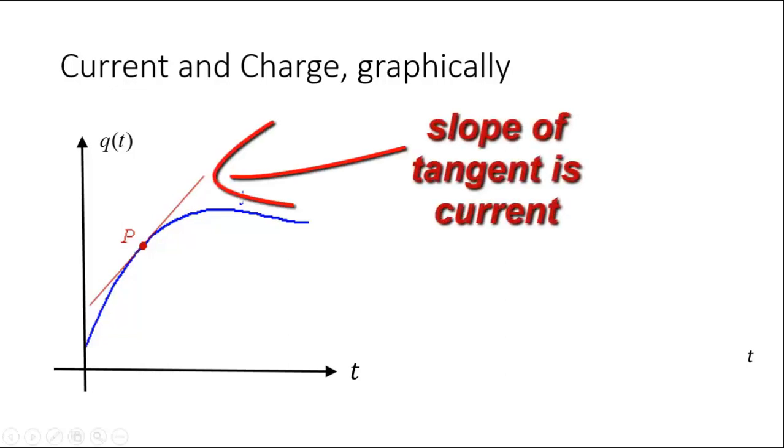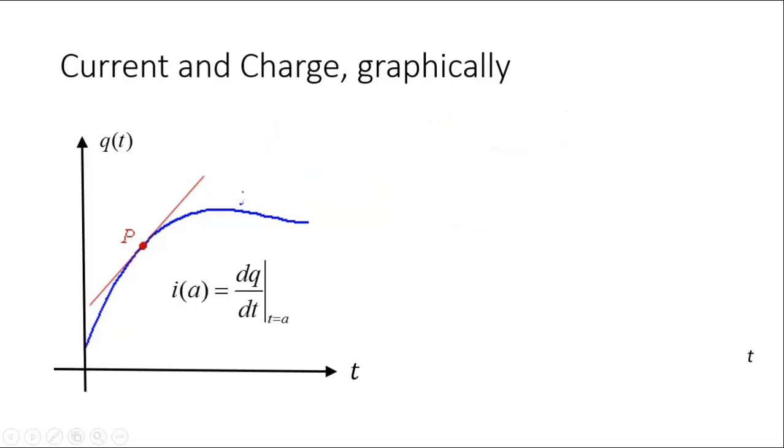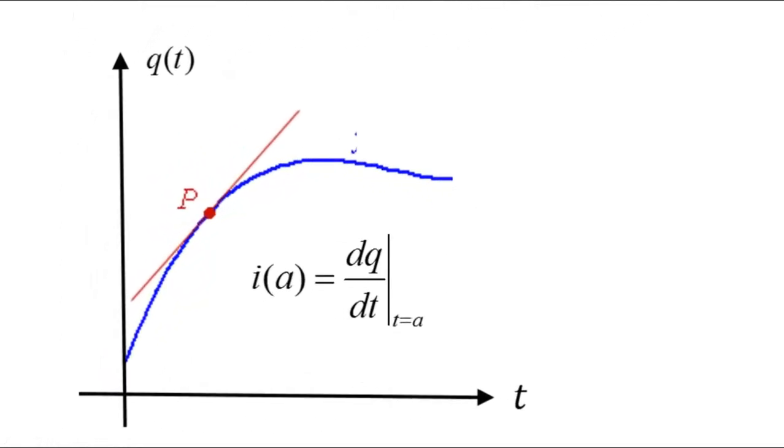For current and charge, graphically, we have q. We have the charge that has crossed the checkpoint at any point in time like that. We've seen that in the previous video. Well, the slope of the tangent to that curve at any point in time tells us what is the value of the current flowing from that checkpoint. We've seen that. In particular, the dq/dt at t equals a is the slope of the tangent at this point in time. That tells us what is the current flowing through that checkpoint at t equals a.